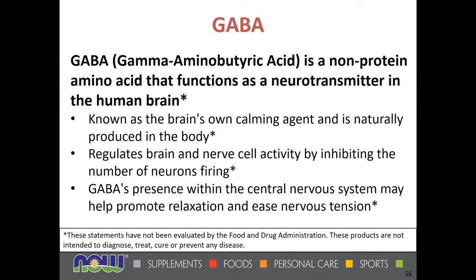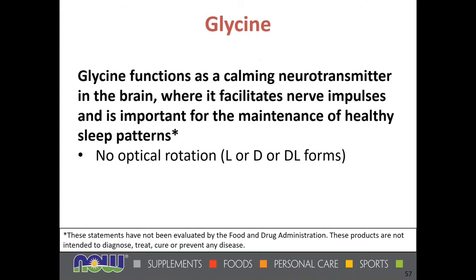GABA is a non-protein amino acid that functions as a neurotransmitter in the human brain. It acts as a brain-calming agent, regulating brain and nerve cell activity by inhibiting the firing of neurons — slowing them down and helping the feeling of calmness. It helps promote relaxation and can ease nervous tension. Glycine is also a calming neurotransmitter in the brain. It facilitates nerve impulses and is important for maintaining healthy sleep patterns; many people like to take glycine at bedtime. Glycine has no optical rotation — no L, D, or DL forms.